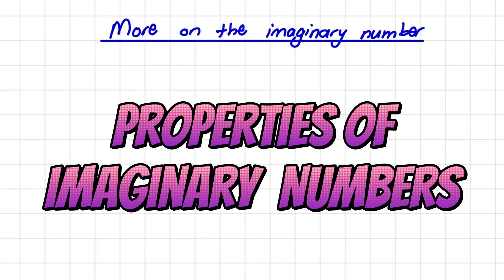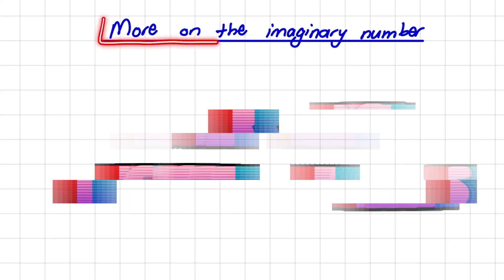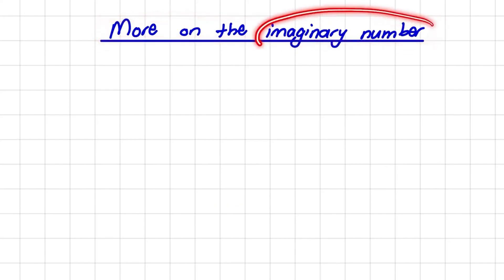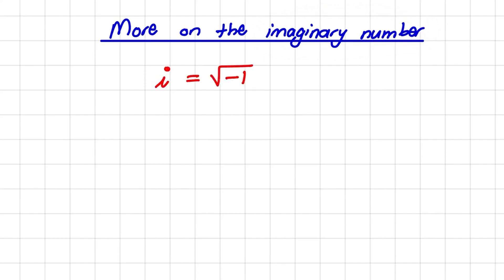Welcome to our series on complex numbers. In this video we'll focus again on the imaginary number and expand on how to use it. In a previous video we learned that the imaginary number is noted as i and it is the square root of negative 1. We know that this number cannot be plotted on a number line and also that it cannot be simplified further.